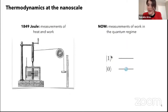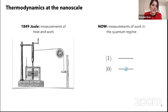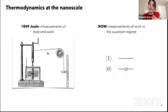Let's start with thermodynamics and why it is interesting. One of the most groundbreaking experiments in physics goes back to 1849, when Joule demonstrated with this apparatus that the work of a falling weight could be converted into heat of agitation in water. This experiment was at the heart of the first law of thermodynamics, which was followed by the second law and the introduction of entropy.